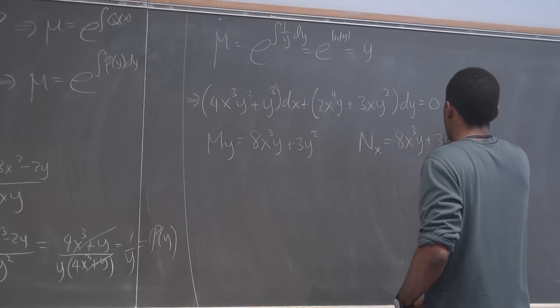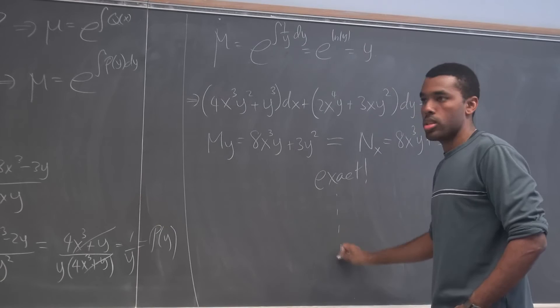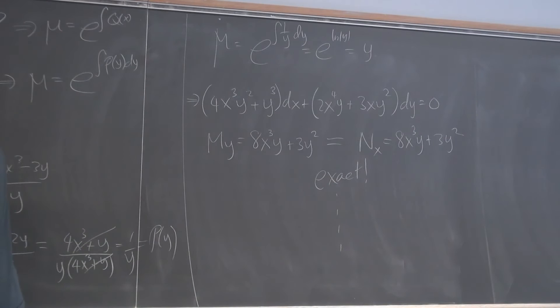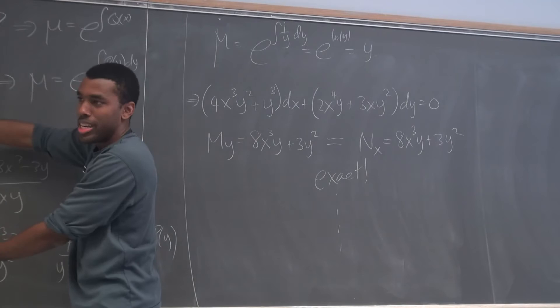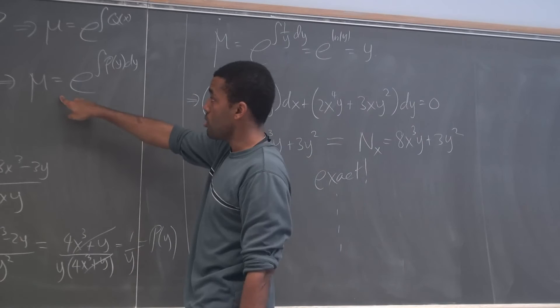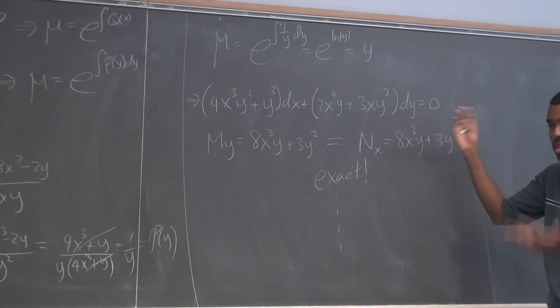Multiplying through by y gives the new equation: (4x³y² + y³)dx + (2x⁴y + 3xy²)dy. Checking: ∂M/∂y = 8x³y + 3y², and ∂N/∂x = 8x³y + 3y² — now they're the same, so it's exact. There are cases where an equation is none of the standard types — not separable, not homogeneous, not linear — so you try to transform it into exact by checking those two test equations. This worked out, so μ = y was the integrating factor.